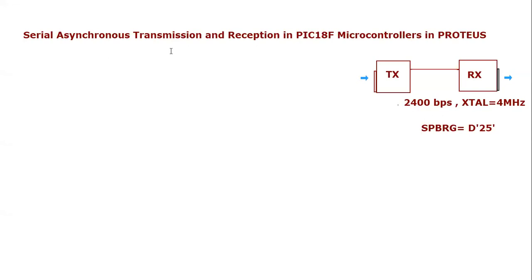We have considered 2400 bits per second — the transmitter will transmit at this rate and the receiver will also receive at the same rate. We will be using a crystal oscillator of 4 MHz. We have done this calculation in a previous lecture for SPBRG. The SPBRG value evaluated for 2400 bps and 4 MHz crystal oscillator is 25 in decimal. This will be used in both the transmitter code and receiver code. Let's write the transmitter code.